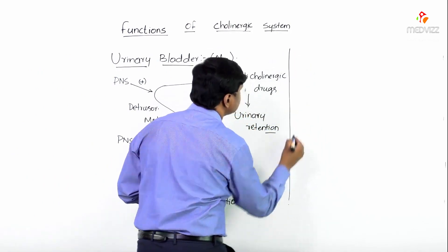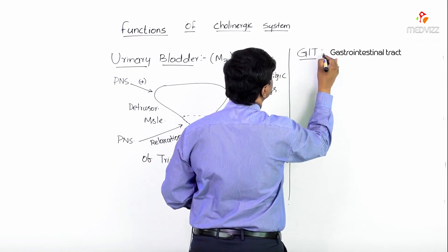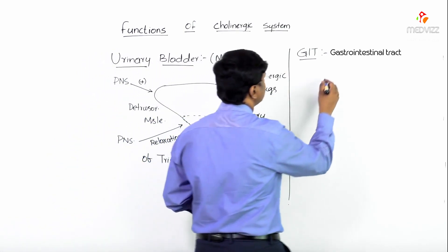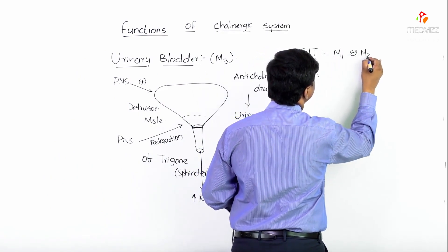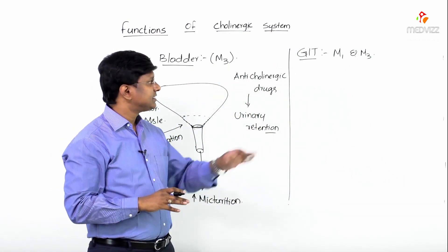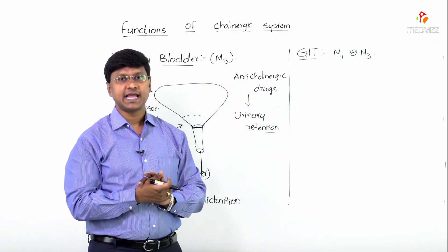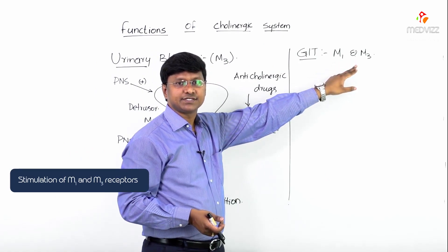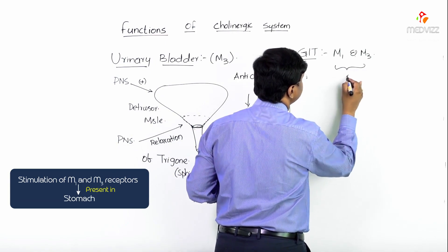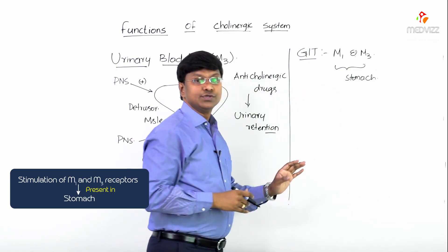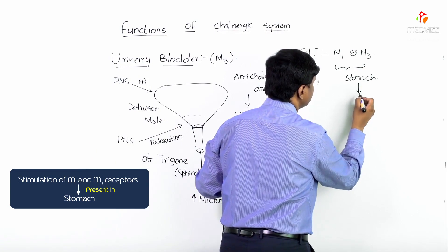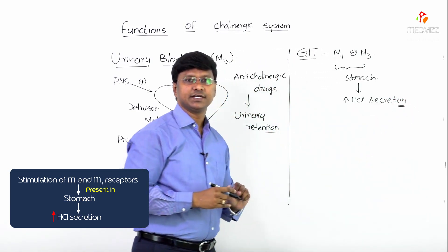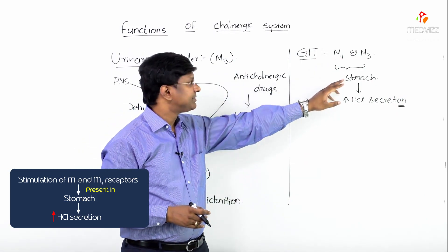Next, let me discuss the effect of the cholinergic nervous system on the gastrointestinal tract. The receptors present on the gastrointestinal tract are M1 and M3 receptors, on which the parasympathetic nervous system will act. By stimulating the M1 and M3 receptors present within the stomach, there will be an increase in HCl secretion.